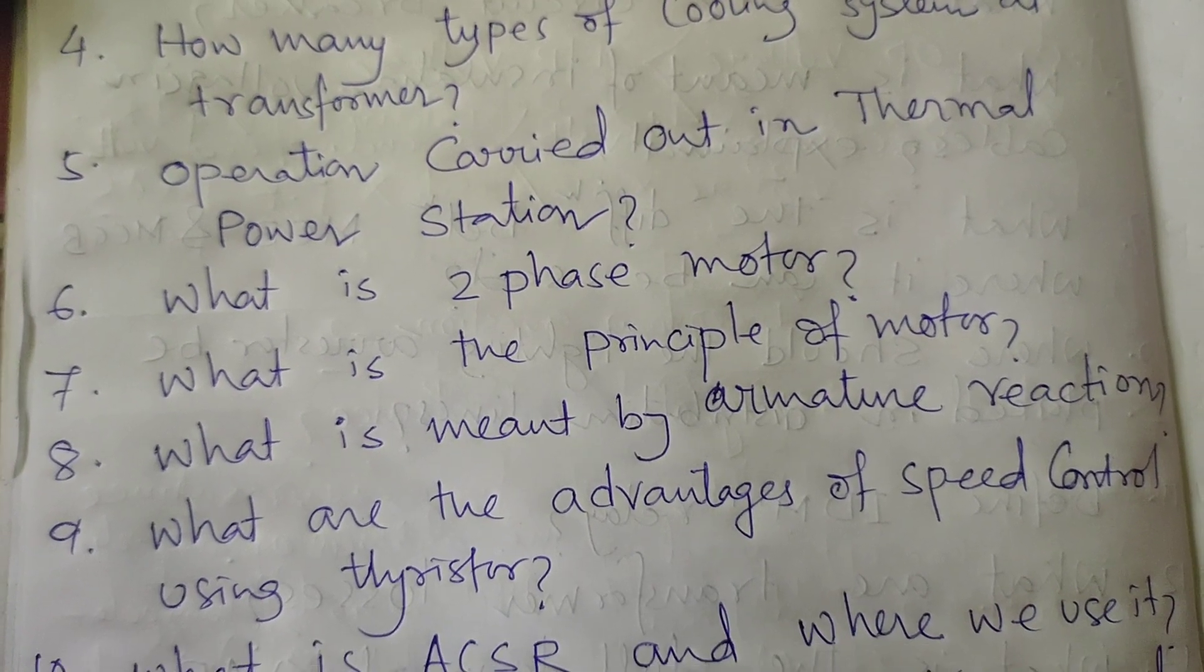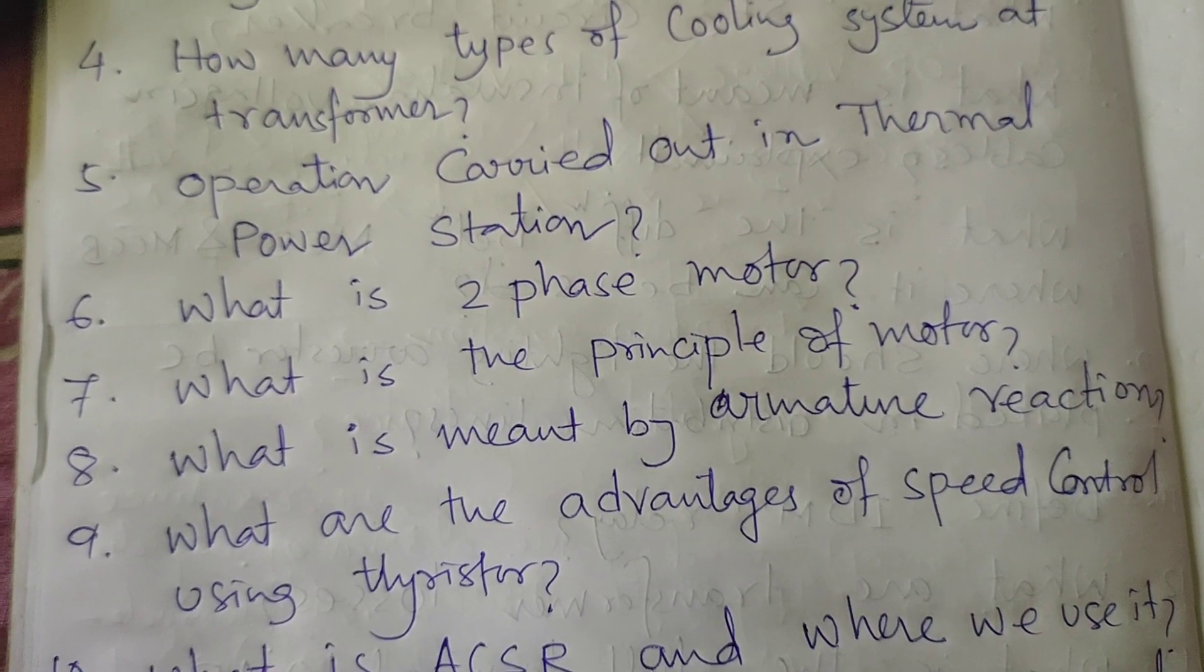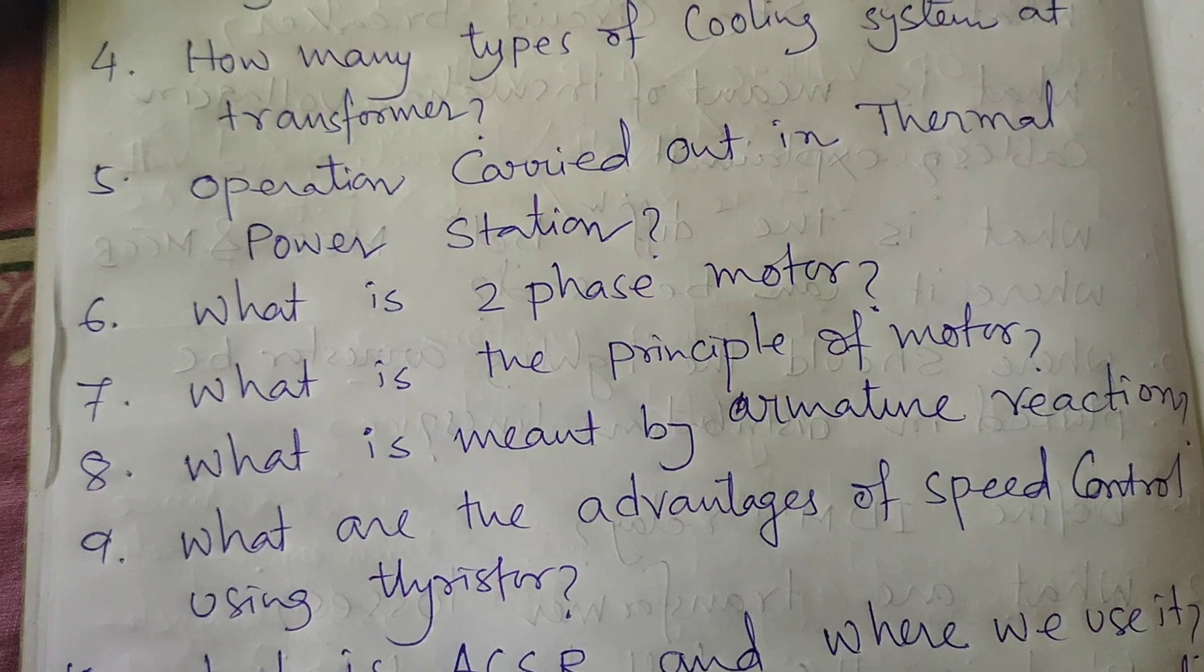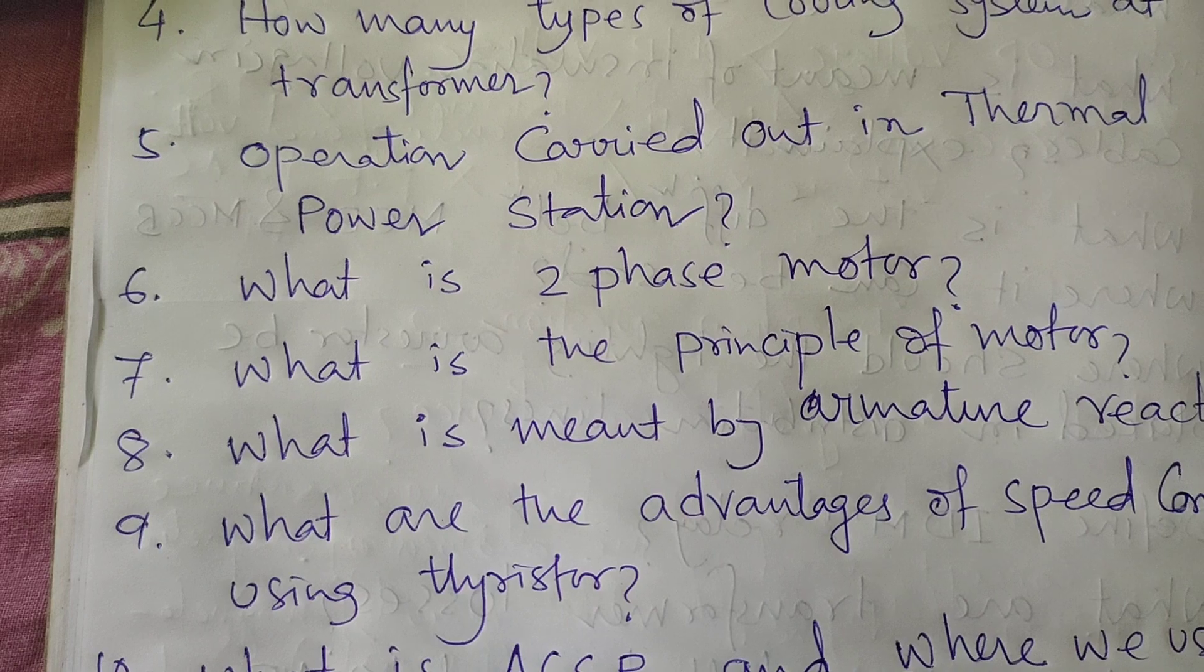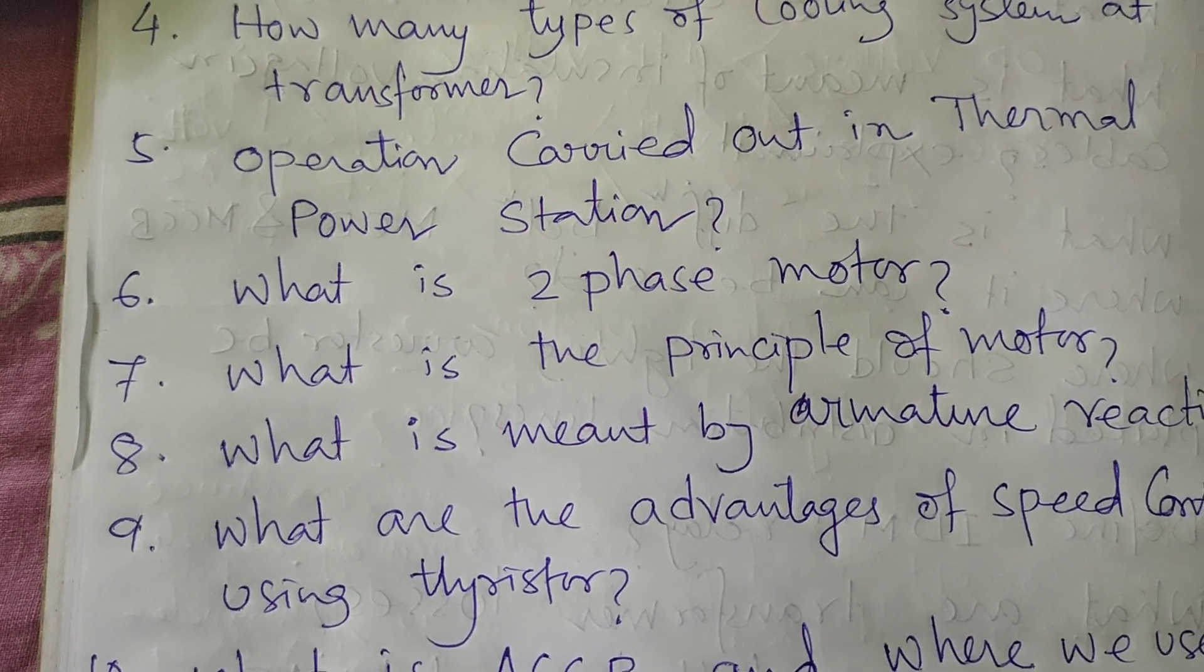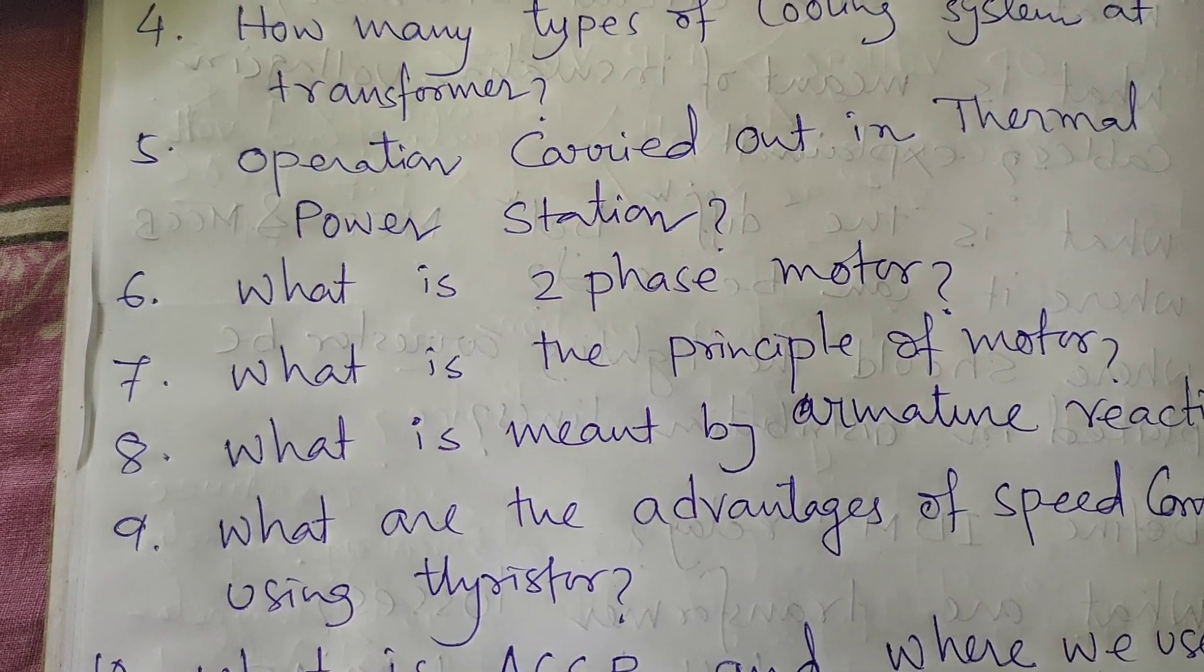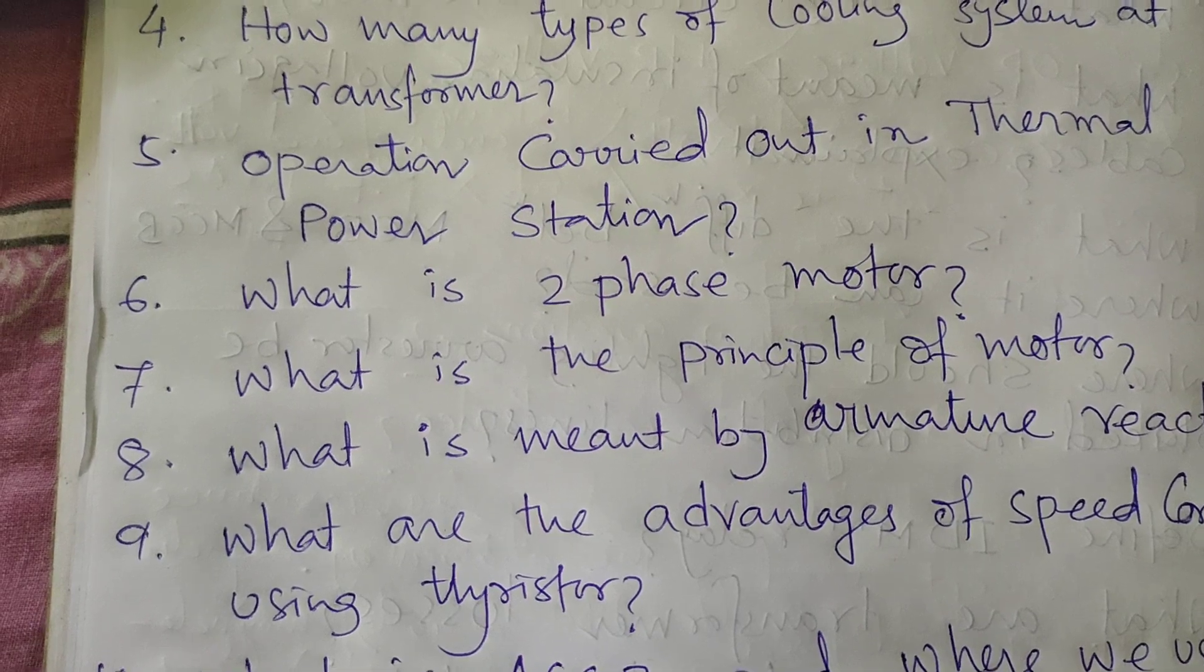Next question: What are the advantages of speed control by thyristor? The advantages are fast switching characteristics, MOSFET, BJT, IGBT, low cost, and higher accuracy.